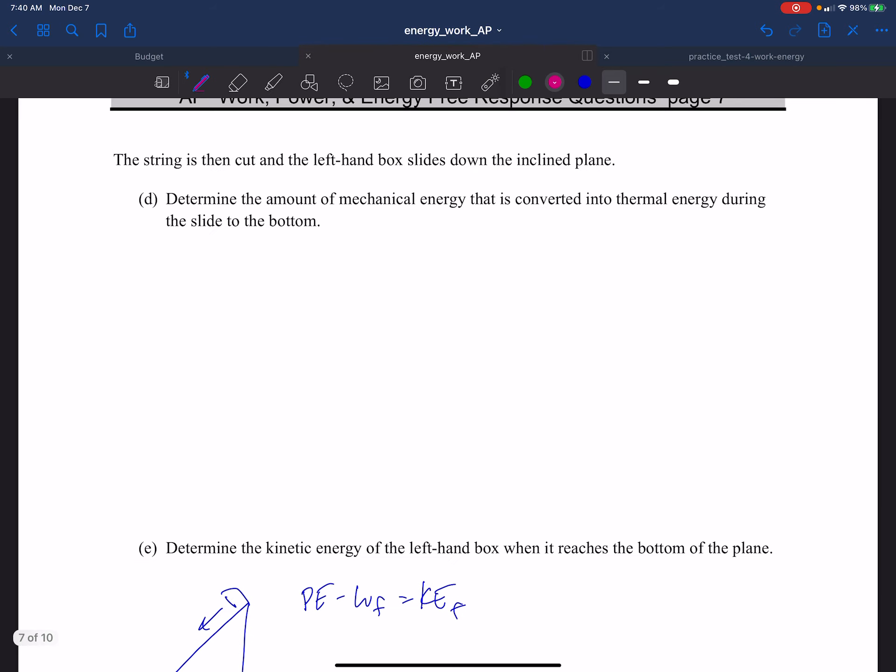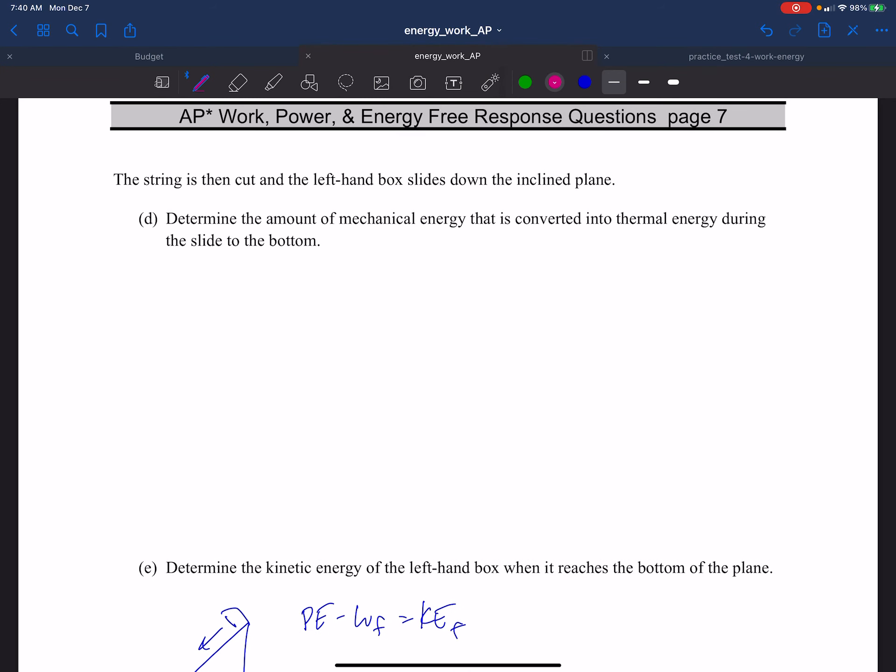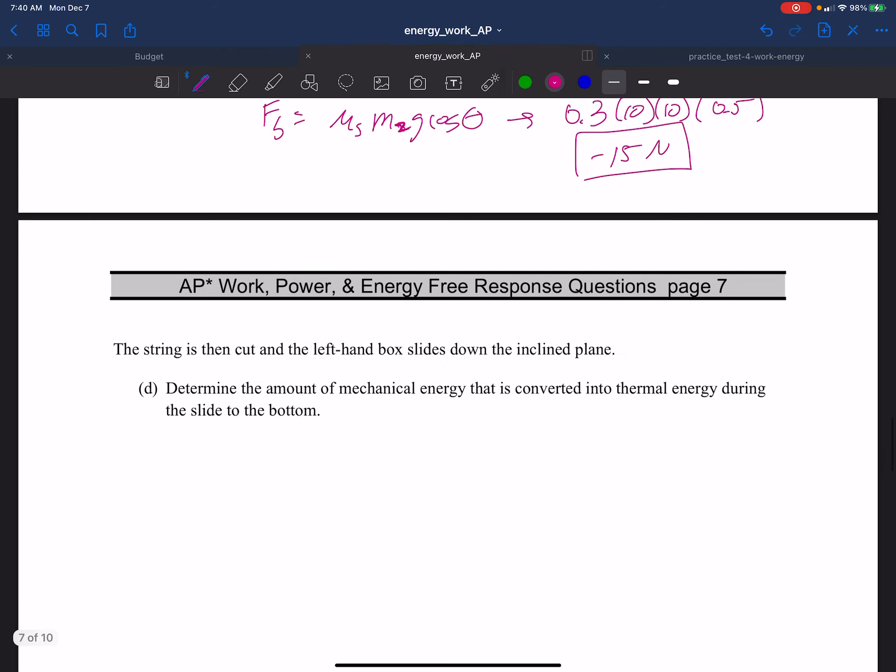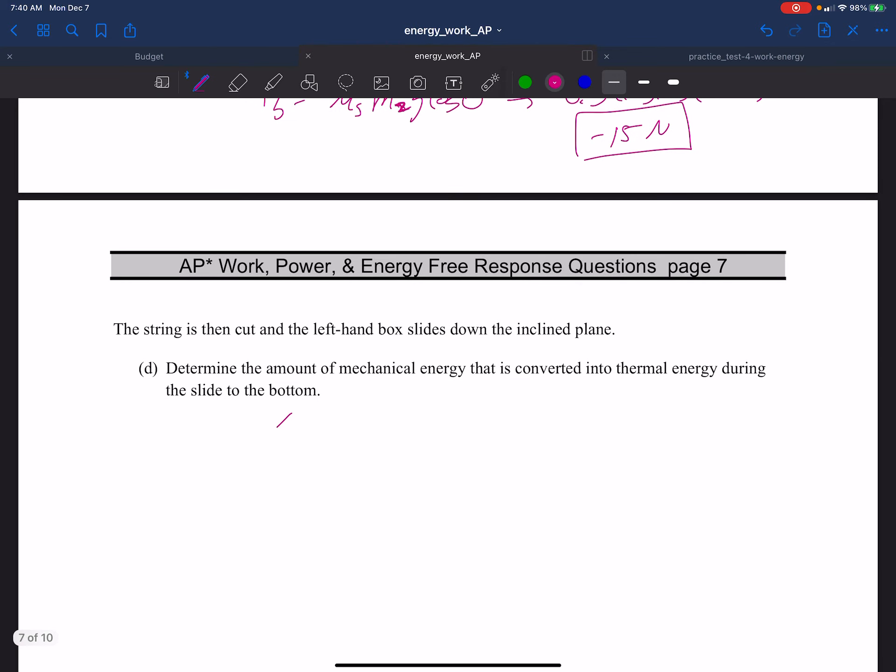The string is cut and the left hand box slides down the inclined plane. What is the amount of mechanical energy that's converted to thermal energy during the slide to the bottom? Well, there's a lot of ways we could do this. Let's just imagine what's happening here. That as this box slides down from here to here, there is some frictional work that's going to happen. So let's just start with an idea of what's happening. We have this initial potential energy. We're going to lose some of that due to the work due to friction. And at the very bottom, it's going to have kinetic energy. Whatever's left over is going to be the kinetic energy at the end.